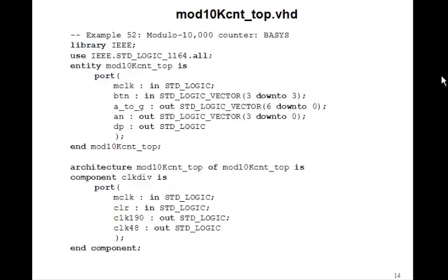So, let's make a top-level design. Here's the top-level design. M clock's coming in. Here are the button. We'll just have button 3 down to 0. This is just for our clear. And then the output of the 7-segment display. We need A to G, AN, and our decimal point.